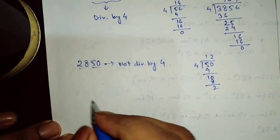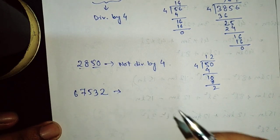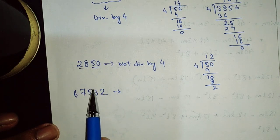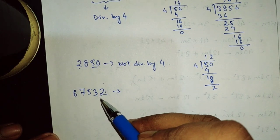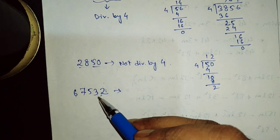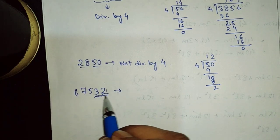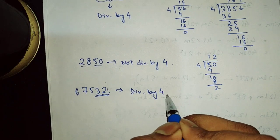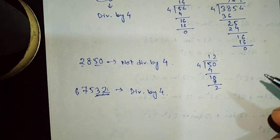If we have to check another number, 67532, what we have to see is whether the last two digits, 32, are divisible by 4. We can do this directly: we know that 32 comes in the table of 4 — 4 times 8 is 32. So 32 is divisible by 4, and therefore this whole number is divisible by 4. Sometimes without going for division, we can find out whether a given number is divisible by 4 or not.